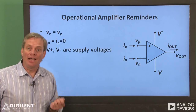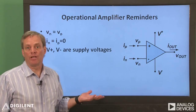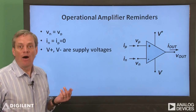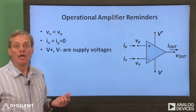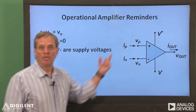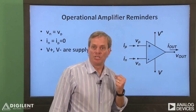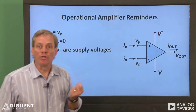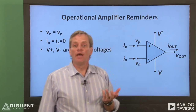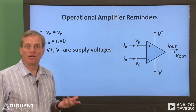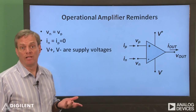When we analyze ideal op-amps, we generally don't assume anything about the voltage and current at the output terminal. However, there are some practical limitations associated with these parameters. The output voltage is restricted to being between the power supply voltages, V-plus and V-minus, and the output current is limited by the design of the op-amp itself. The op-amps in the Digilent Analog Parts Kit provide relatively little current, but higher current devices are available.